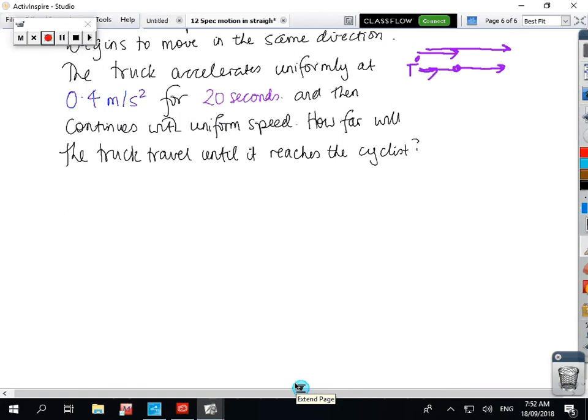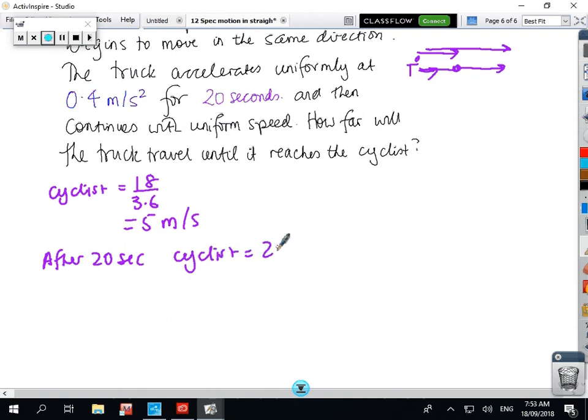So we've got different speeds. So the cyclist was going at 18 kilometres per hour, so we divide by 3.6, so the cyclist is going at 5 metres per second. Okay, so after 20 seconds, the cyclist has gone 100 metres. So we know that that's where the truck is starting to chase.